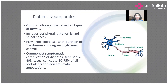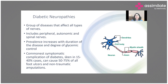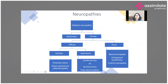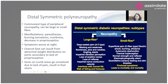Diabetic neuropathies is a very vast and very common topic — almost 70% of patients will have it. This is a group of diseases that can affect all types of nerves: larger nerves, small nerves, multi-nerves, single nerves. It can affect peripheral nerves, autonomic nerves, and spinal nerves. It is the commonest symptomatic complication of diabetes and can result in foot ulcers and non-traumatic amputations.